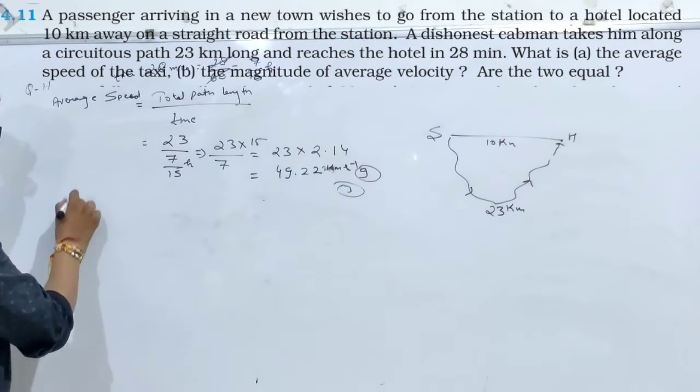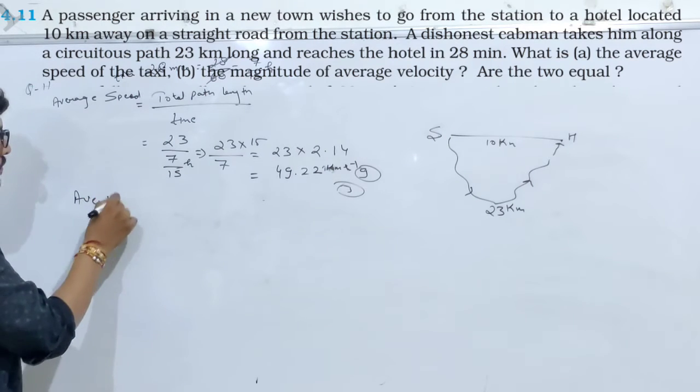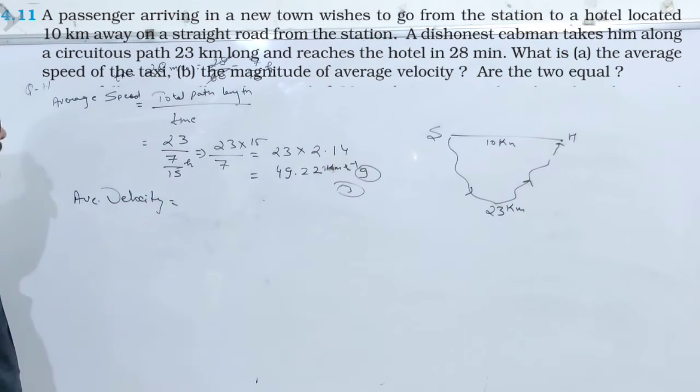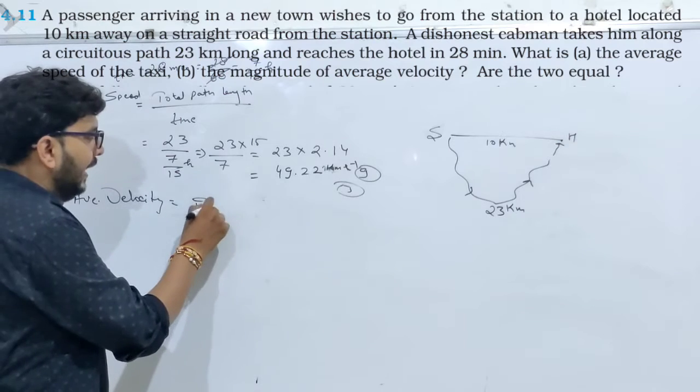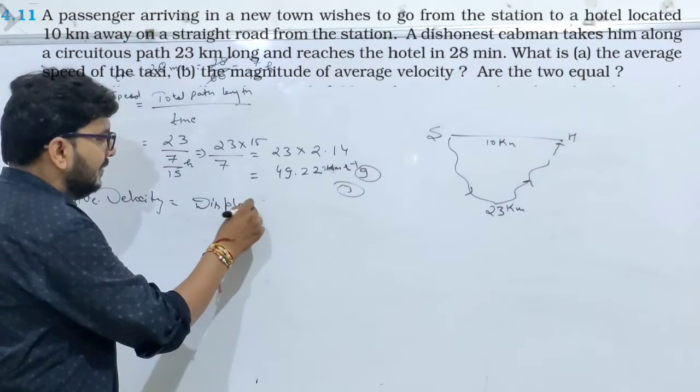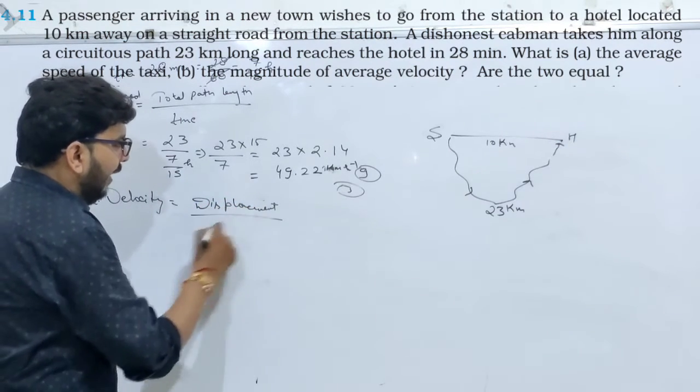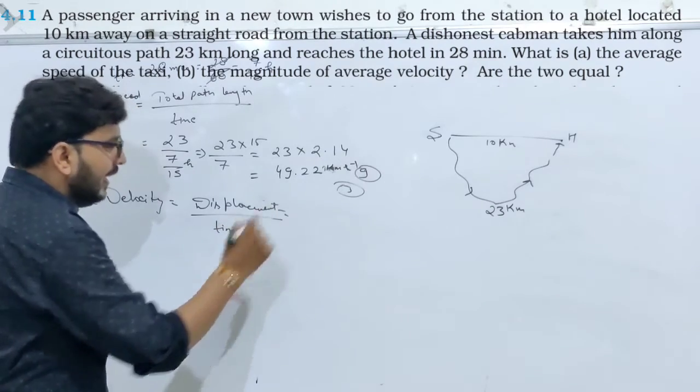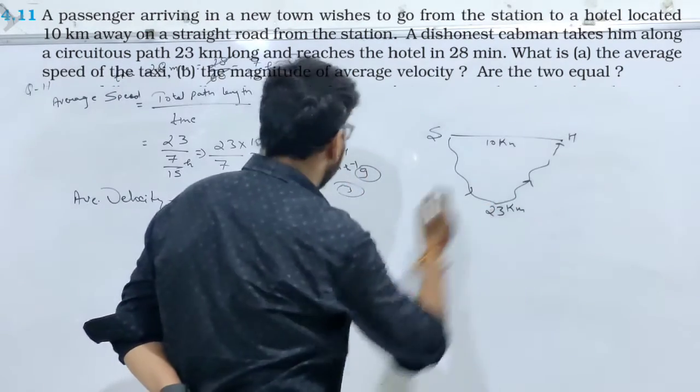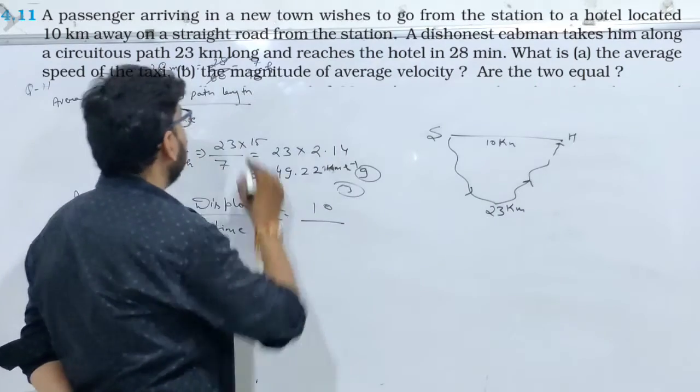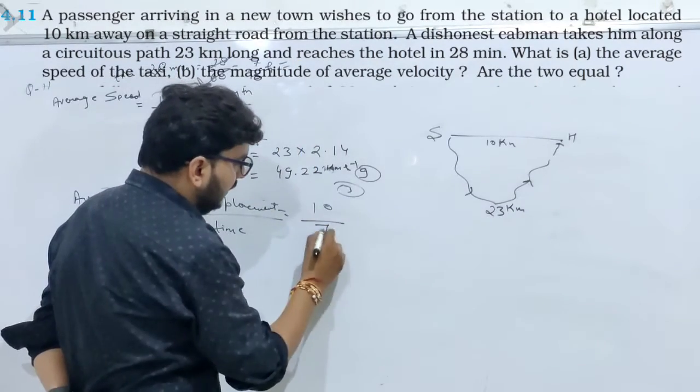Now average velocity. अब आपको average velocity निकाल लीजिए. तो average velocity होती है क्या, displacement divided by time. Displacement कितना है? Displacement is 10 km, और time तो भाई, total time count होगा.